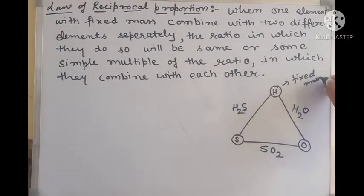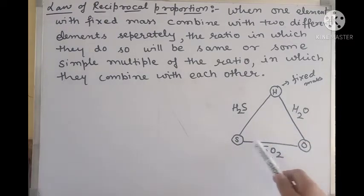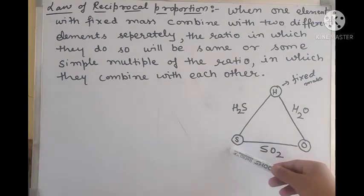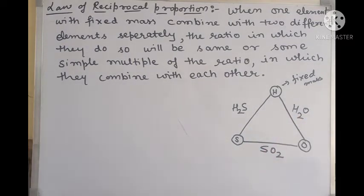We will see what fixed mass means. When one element with fixed mass combines with two different elements - hydrogen combines with sulfur for the formation of H2S, while the same hydrogen combines with oxygen for the formation of water.